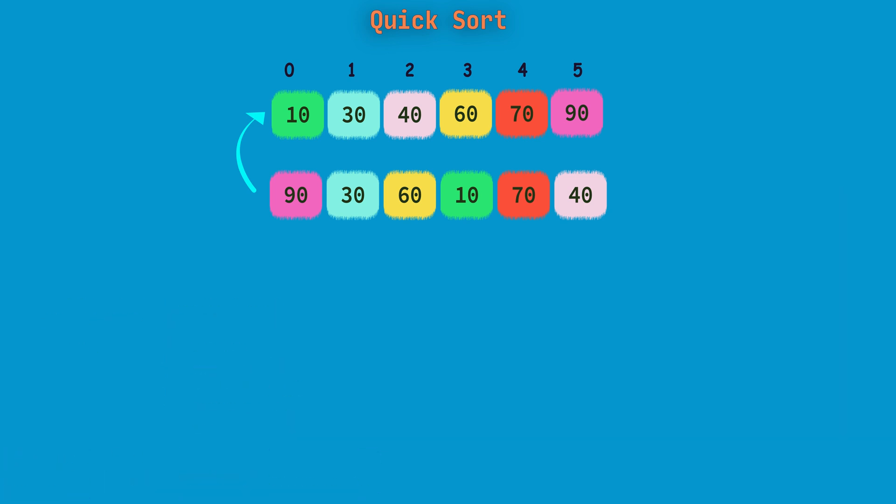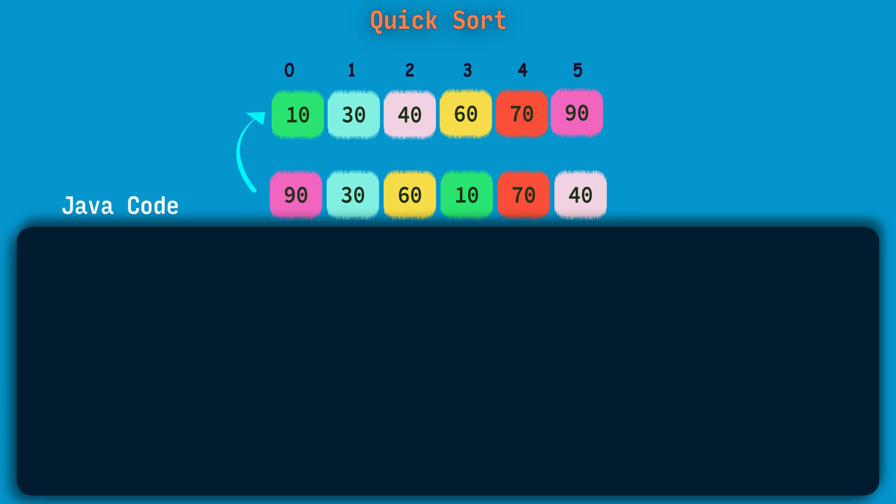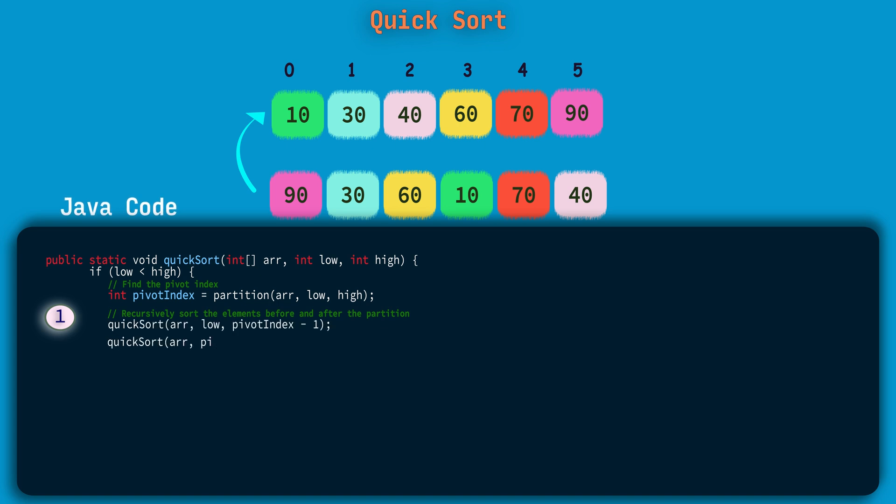So now let's code the algorithm quickly. We will start with the Java code. We will code the first method, that is the QuickSort method. So let's write the QuickSort method taking three arguments: array, low, and high index. And for the given array we need to get the pivot index from where we can make a partition, and to this partition method again I will send the same arguments, that is array, low, and high indexes.